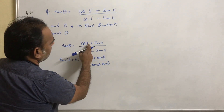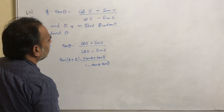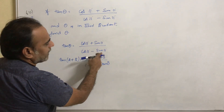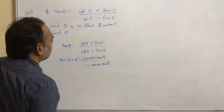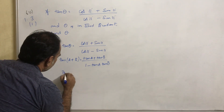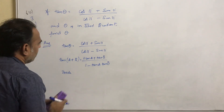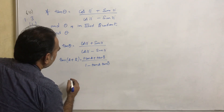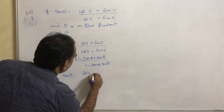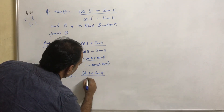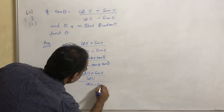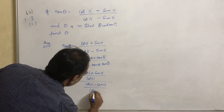We have to divide the numerator and denominator by cos 11. If we divide numerator and denominator by cos 11, tan theta becomes: cos 11 plus sin 11 divided by cos 11, all over cos 11 minus sin 11 divided by cos 11.